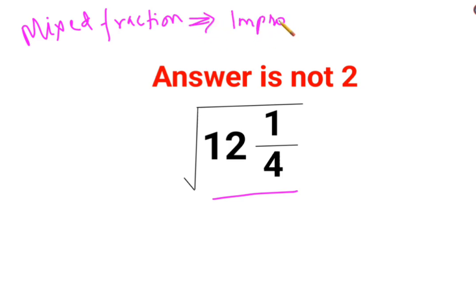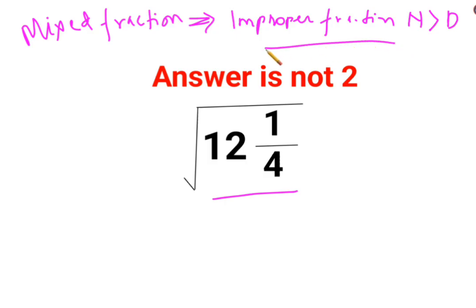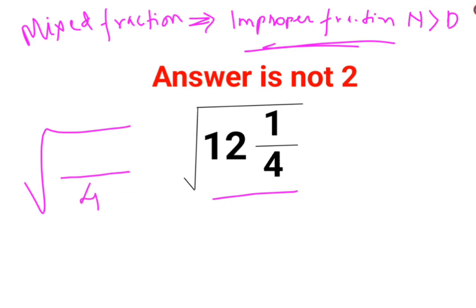Now what is an improper fraction? Any fraction whose numerator is greater than the denominator is called an improper fraction. So here, we will keep the denominator as it is, which is 4 always — in the case of an improper fraction, the denominator remains the same.